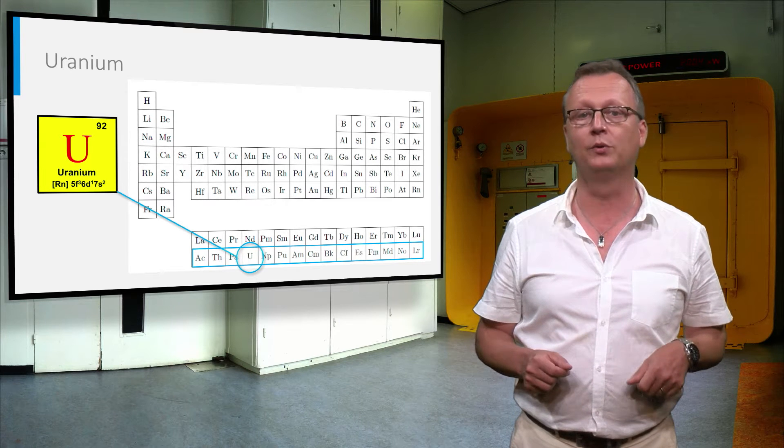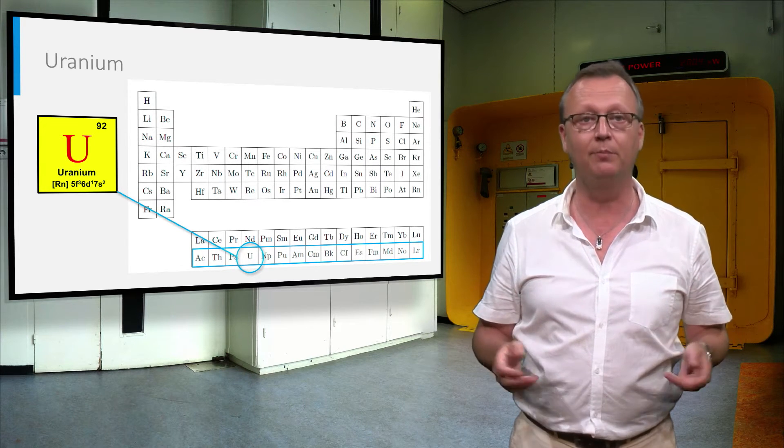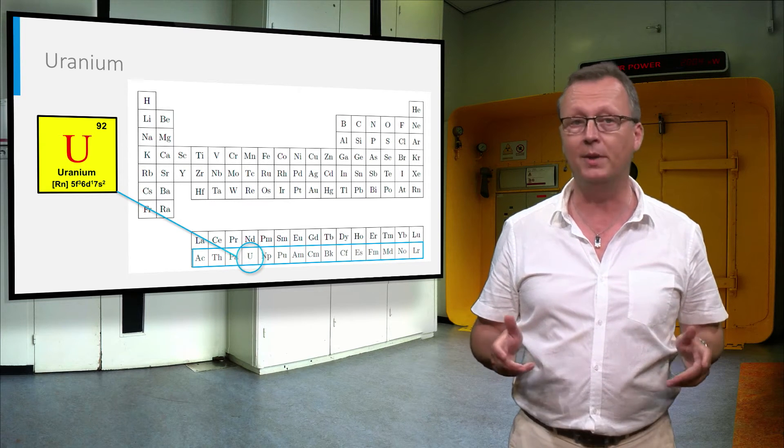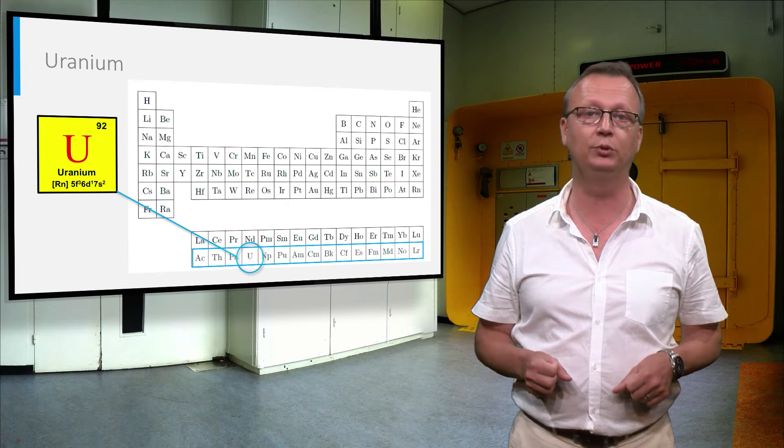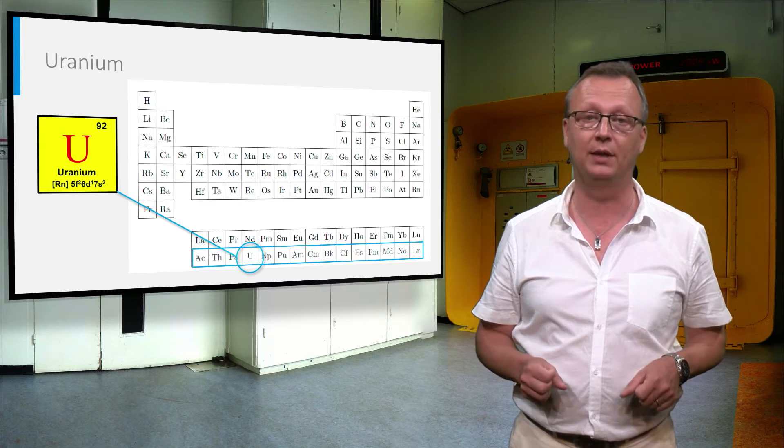In uranium the electrons occupy seven shells, the fifth, sixth and seventh being partially filled due to their close energy. Uranium has two electrons in the 7S subshell, one electron in the 6D subshell, and three in the 5F subshell.